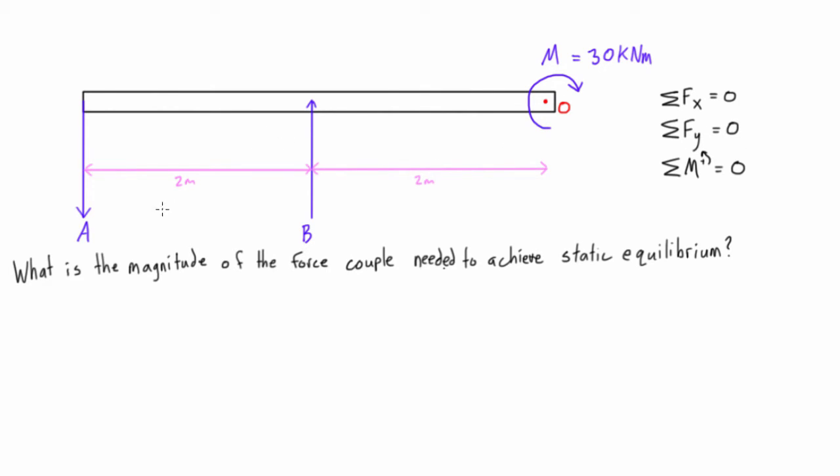So this object, no matter what we assign to the magnitude of A and B, this object will not be wanting to translate or basically slide up or slide down, but really what we're concerned about here is the moment.